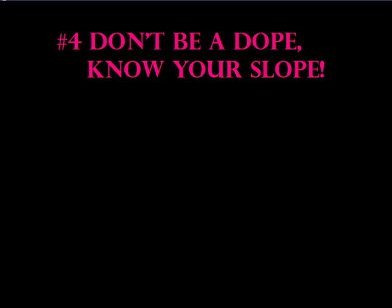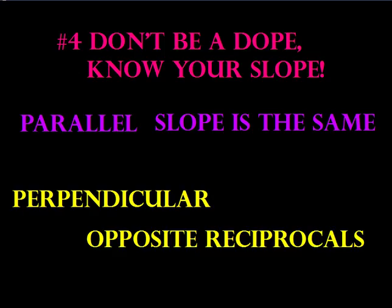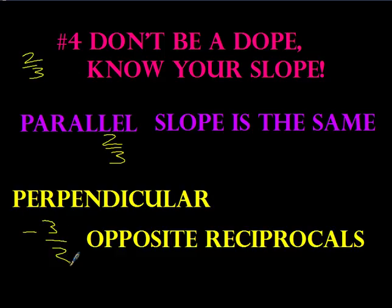Number 4 — don't be a dope, no, you're a slope! Make sure you remember that for parallel slopes, the slopes are exactly the same. For perpendicular slopes, we have slopes that are opposite reciprocals. For a quick example: if the slope of a line is 2/3, the parallel slope would also be 2/3. The perpendicular slope — we flip it and change the sign — would be negative 3/2.